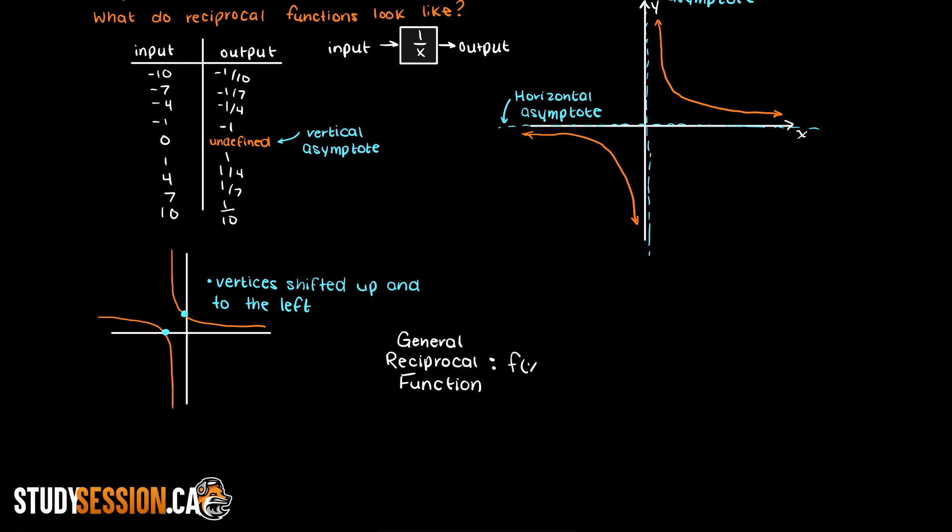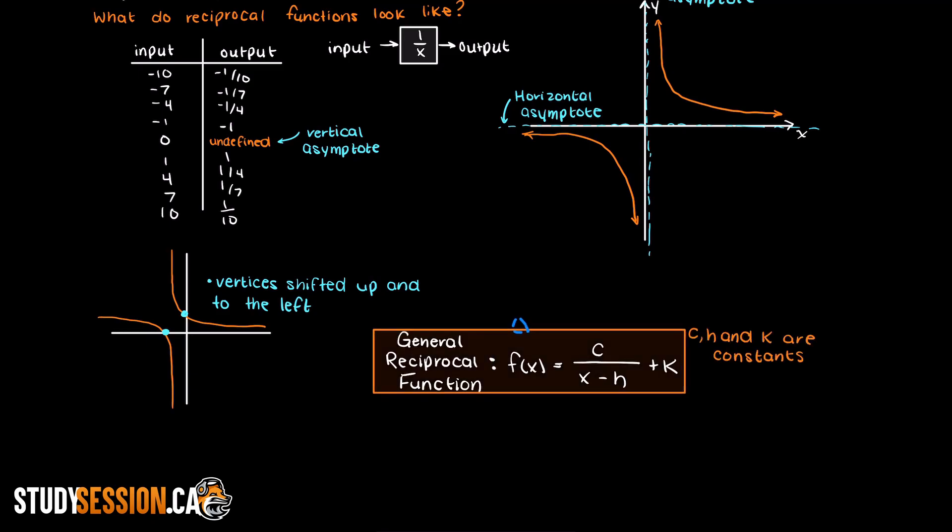Well we can add two more constant variables here to get a more general reciprocal function. So in general the first inverse equation here is just the general reciprocal function where c is equal to 1 and h and k are set to 0.